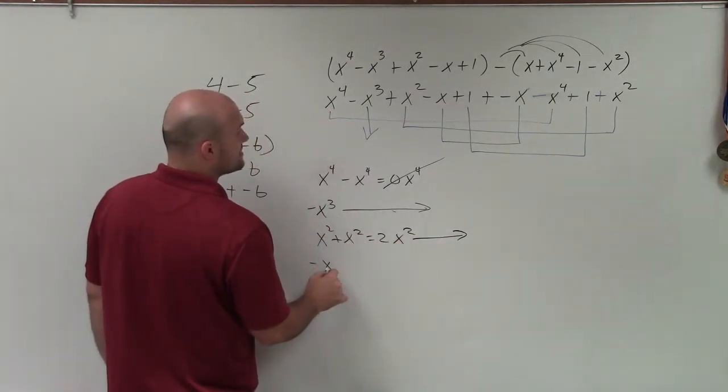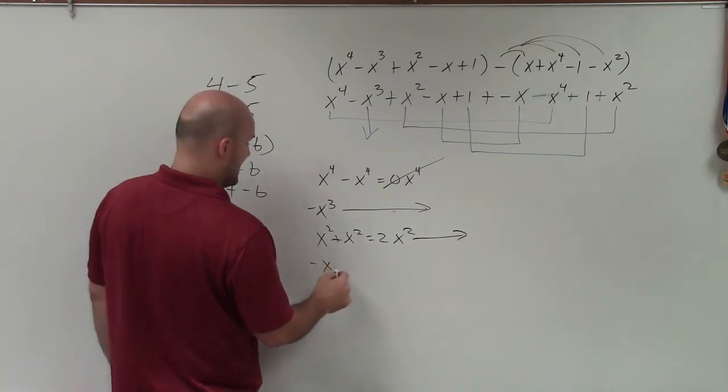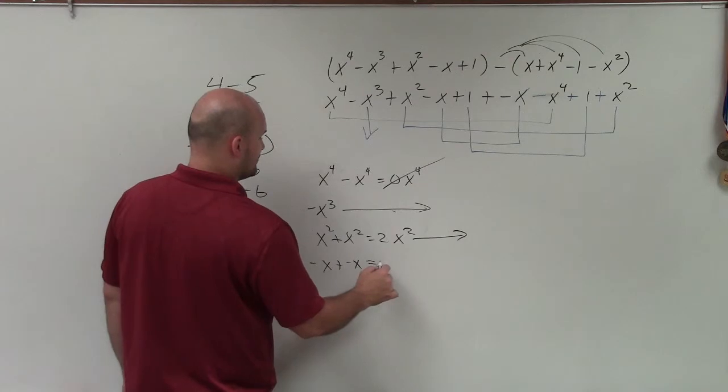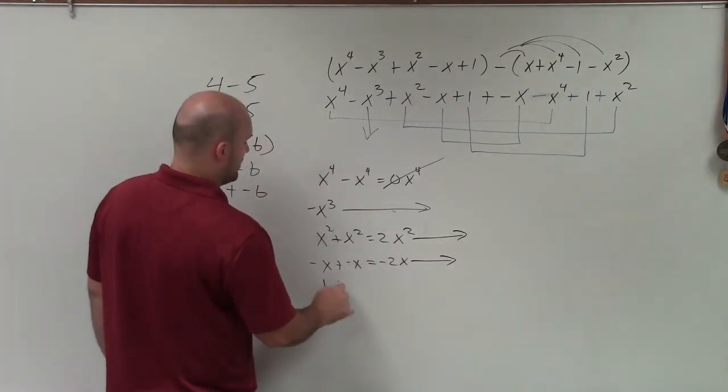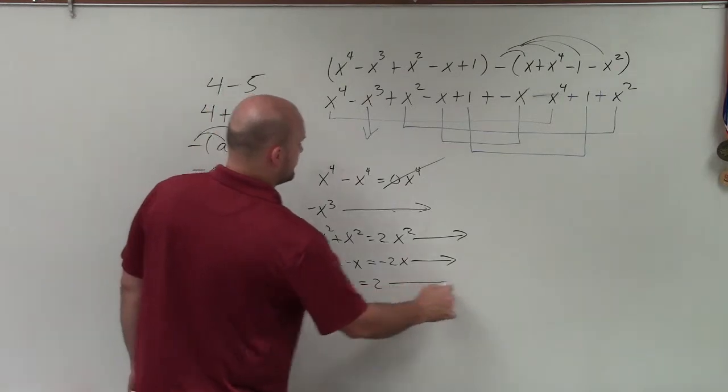Then we have negative x plus another negative x, which equals negative 2x. Goes to our answer. And then we have 1 plus 1 equals 2, which goes to our answer.